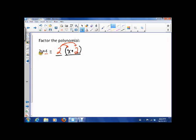So 2 times x is 2x. 2 times 2 is 4. So those are my factors. So we can say the factors of 2x plus 4 are 2 and x plus 2.